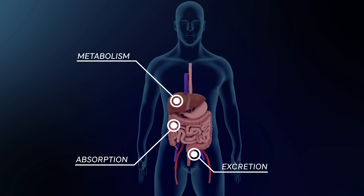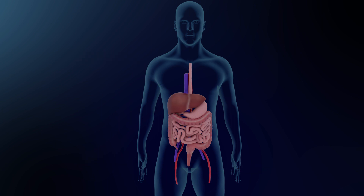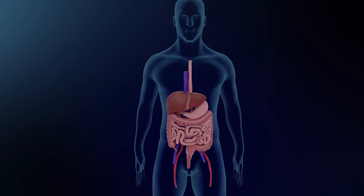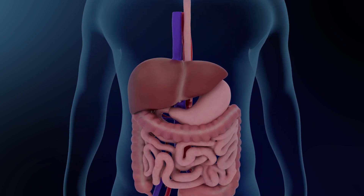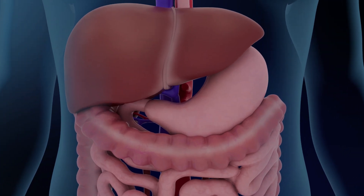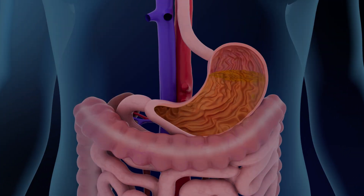This video will focus on absorption. Absorption refers to the transportation of a drug from its site of administration to the systemic circulation. When a drug is administered orally, it is first dissolved into smaller molecules in the stomach acid. The molecules are then transported into the small intestine, where absorption takes place.